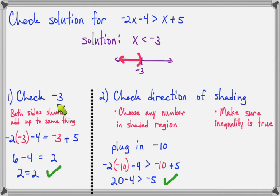So when you check the number, both sides should match. But when you check something in the shaded area, the two sides are not going to match, but your inequality should be true.